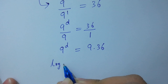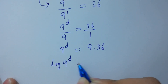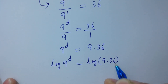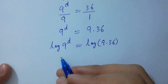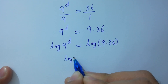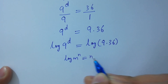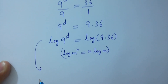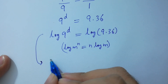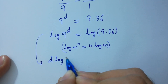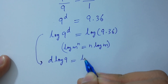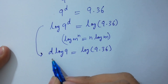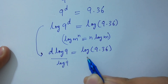take log on both sides. So, log 9 to the power d equal to log of 9 times 36. We have d log 9 equal to log 9 times 36. Divide by log 9 on both sides.